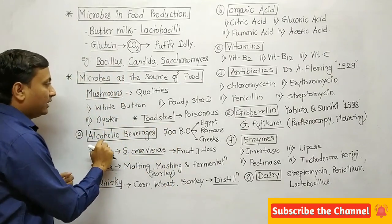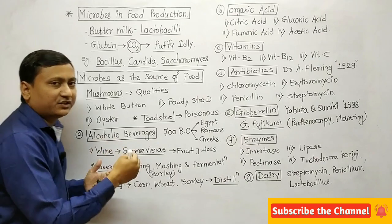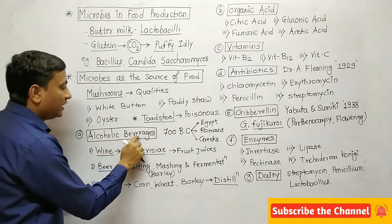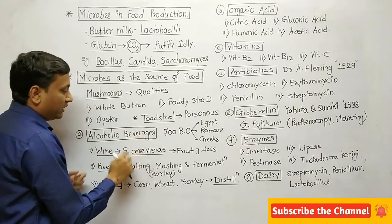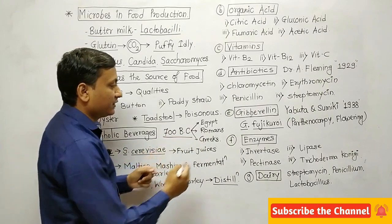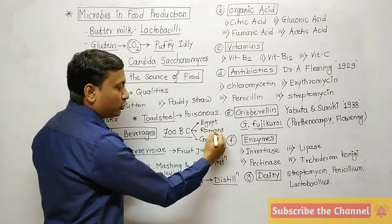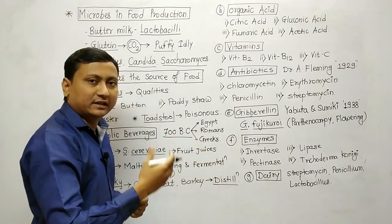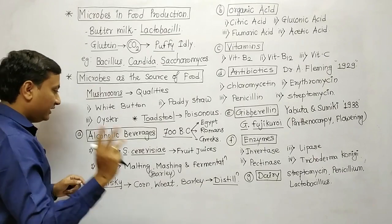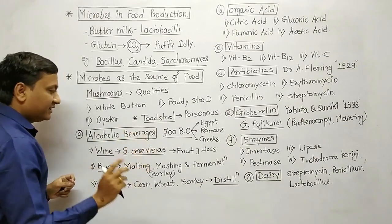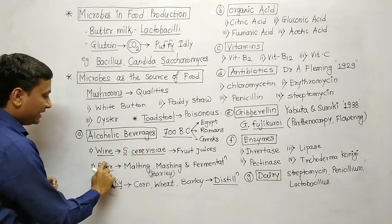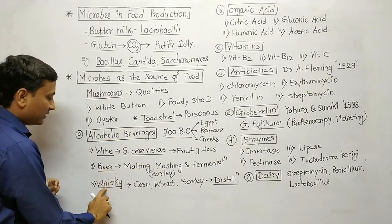The next topic is microbes in industrial production. First are alcoholic beverages. Alcoholic beverages were discovered around 700 BC by the Egyptians, Romans, and Greeks. There are three alcoholic beverages in the textbook: first is wine, second is beer, and third is whiskey.